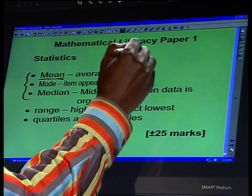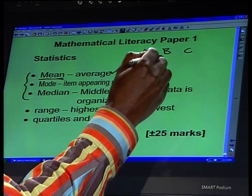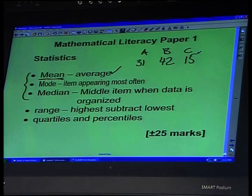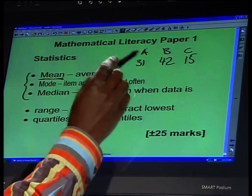We'll quickly maybe look at a classroom maybe consisting of three learners. Now three learners would be like learner A, B, C. Learner A, they wrote a test, got 31 marks out of 50. Learner B got 42 out of 50. Learner C got 15 out of 50. Now, based on these numbers, you'll be asked questions such as calculate the mean of these scores. You see, it is important to understand now what the mean is and the mean is the average. And how do we calculate the average? We add all these numbers and divide by the number of learners that wrote, which is three in this case.